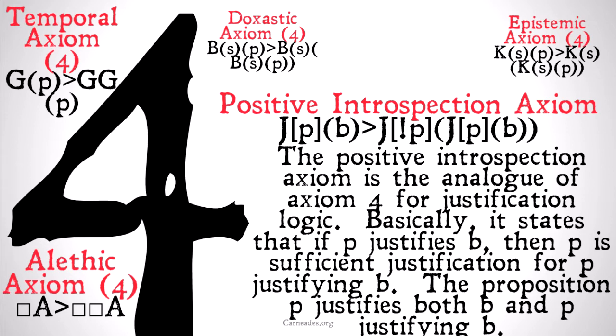The positive introspection axiom is an analog of axiom 4 for justification logic, because it takes a single strong operator and doubles it. Basically, it states that if P justifies B, then P is sufficient justification for P justifying B.